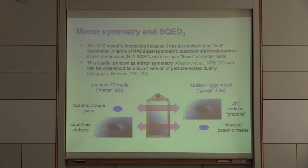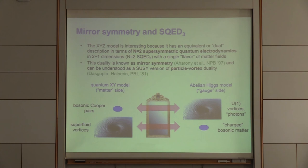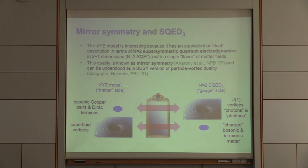This XYZ theory has a dual description in terms of supersymmetric quantum electrodynamics — a duality known as mirror symmetry, which is a supersymmetric version of the usual particle-vortex duality. In the ordinary duality, bosonic Cooper pairs are dual to vortices and photons in a gauge theory. In the supersymmetric version, Dirac fermions map to fermionic excitations of the gauge field — the photino — and the matter side has both bosonic and fermionic matter charged under the gauge field.